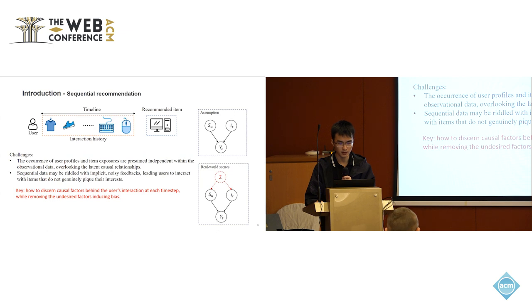The existing measures generally focus on modeling the user-item statistical correlation. They often assume that the occurrence of the user profiles and the item exposures are independent within the observational sequential data. However, although it is convenient for certain analysis, this assumption usually cannot be satisfied in real applications. In most cases, behind the user history and the view-time item interaction, there usually exists some potential causal relationship, and it is usually not directly observed.